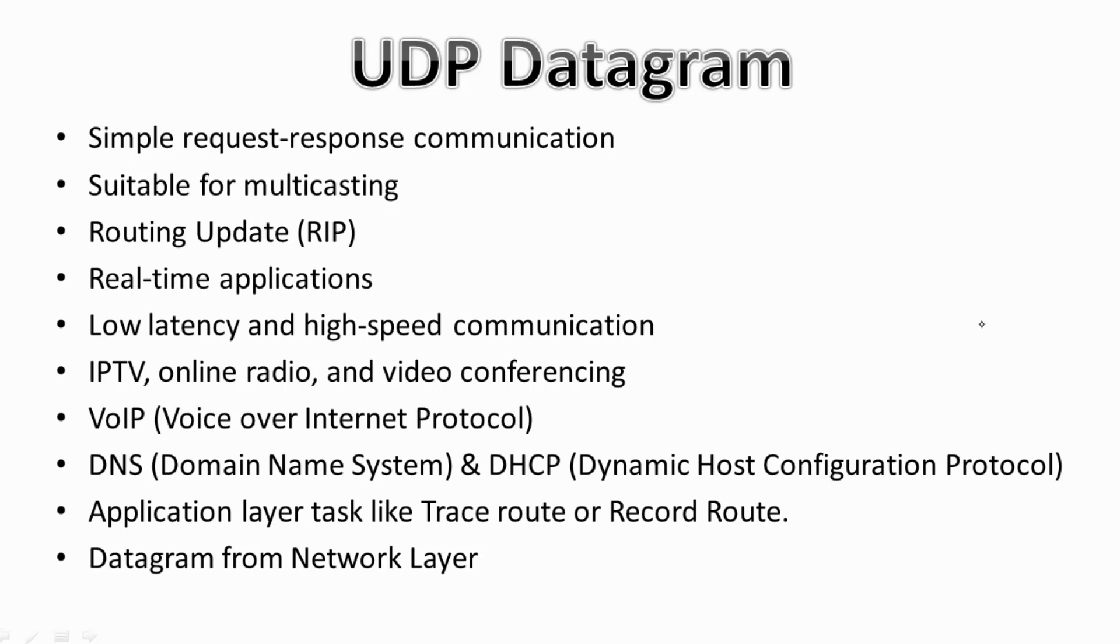The application layer can perform tasks like traceroute, record route, and timestamp through UDP. The basic conclusion of how UDP works is that UDP takes a datagram from the network layer, attaches its header, and sends it to the user.